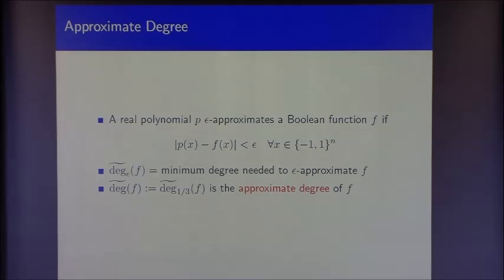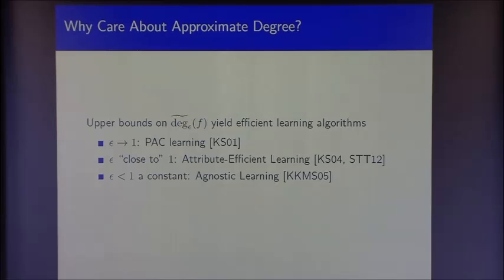We could actually replace one-third with any constant strictly less than one and it wouldn't change the theory in any way — it's chosen by convention. Upper bounds on approximate degree immediately yield efficient learning algorithms and in fact underlie many of the fastest known learning algorithms in a wide variety of scenarios.